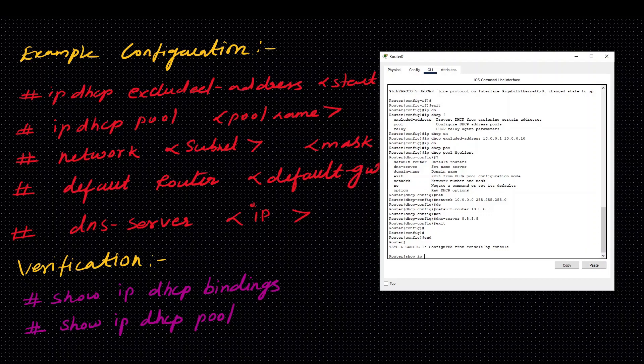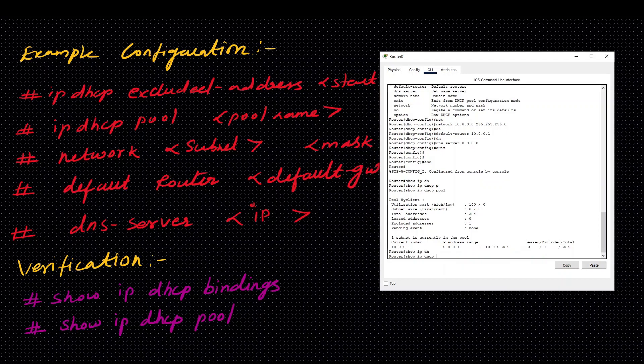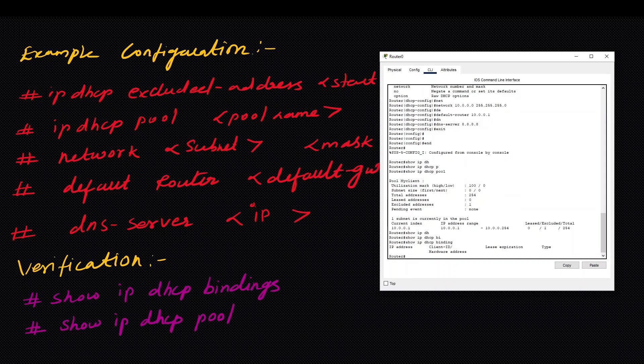Verification. Show ip dhcp pool — okay, you can do it. You can find all the details using show ip dhcp bindings. If you have a binding, or an IP is allocated, you can locate the IP.